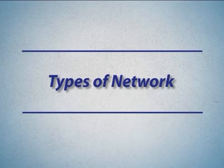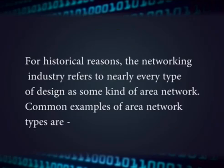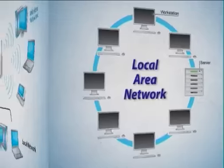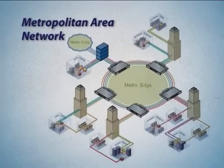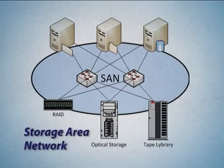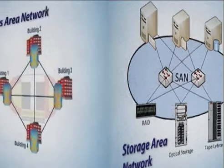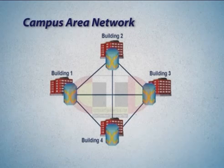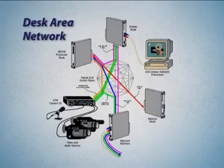Introduction to network types: One way to categorize different types of computer network designs is by their scope or scale. The networking industry refers to nearly every type of design as some kind of area network. Common examples include LAN (Local Area Network), WLAN (Wireless Local Area Network), WAN (Wide Area Network), MAN (Metropolitan Area Network), SAN (Storage/System/Server Area Network), CAN (Campus/Controller/Cluster Area Network), PAN (Personal Area Network), and DAN (Desk Area Network).